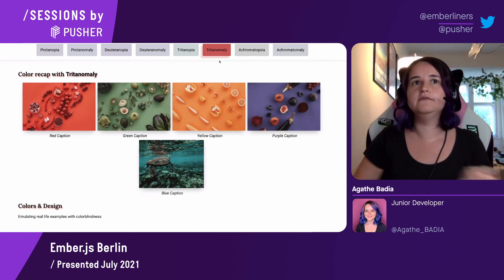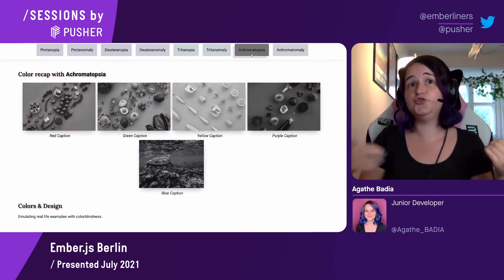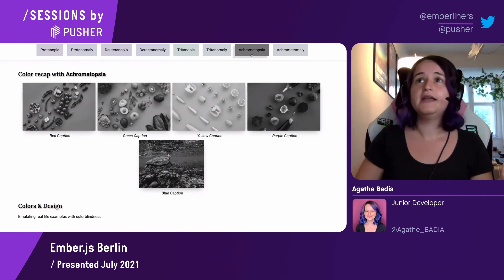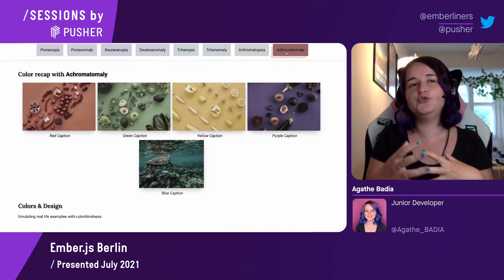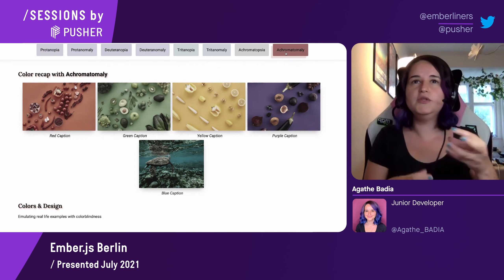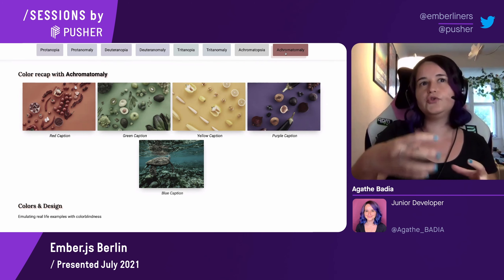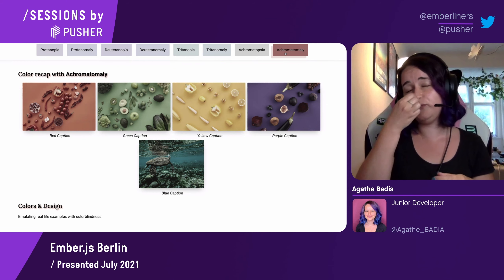Tritanomaly is again a very mild version. Achromatopsia is literally when you do not see any colors at all — only shades of gray. And achromatomaly, its milder version, makes colors appear as a dull version of what non-colorblind people see.